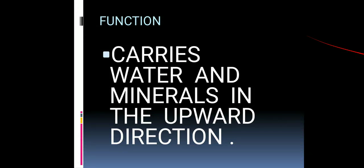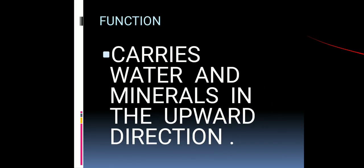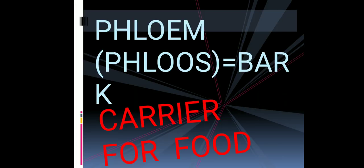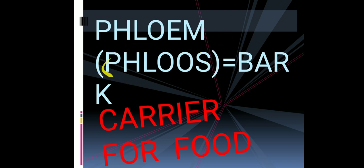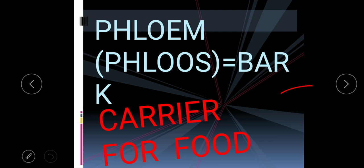Good morning students. Today we start with the second type of complex permanent tissue, which is phloem. This is a complex permanent tissue because it is composed of more than one type of cells which are structurally and functionally different. Phloem is derived from a Latin term 'phloios' which means bark.